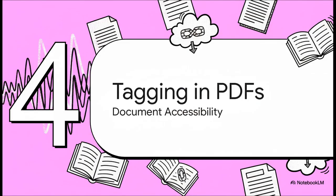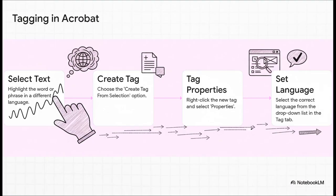This isn't just a website thing — the exact same ideas apply to other files we use all the time, like PDFs. We need to make sure those are just as accessible. In a tool like Adobe Acrobat Pro, you don't even have to touch any code. You literally just highlight the text that's in another language, pop open the accessibility properties, and choose the right language from a dropdown menu. The software does all the heavy lifting for you in the background.